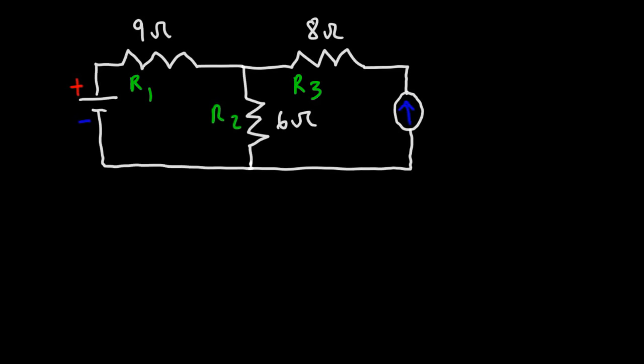In this video we're going to solve this circuit using mesh current analysis. On the left is a 90 volt battery, R1 is 9 ohms, R2 is 6 ohms, R3 is 8 ohms, and we have a 5 amp current source.